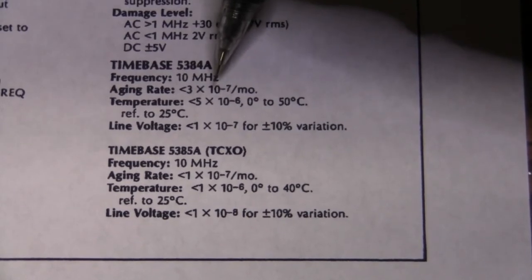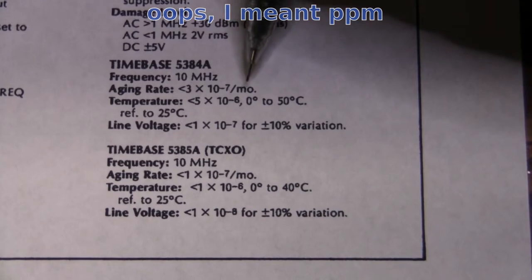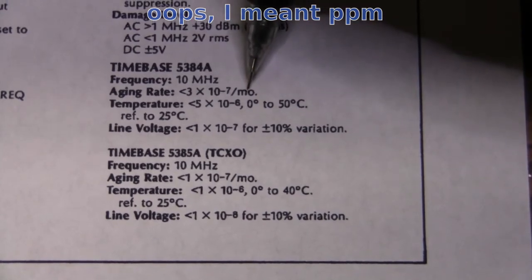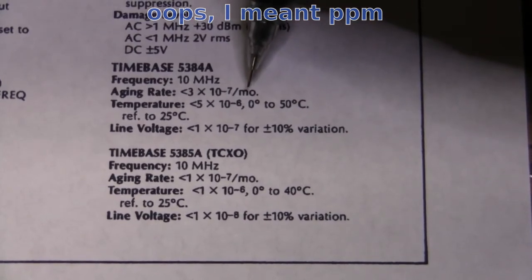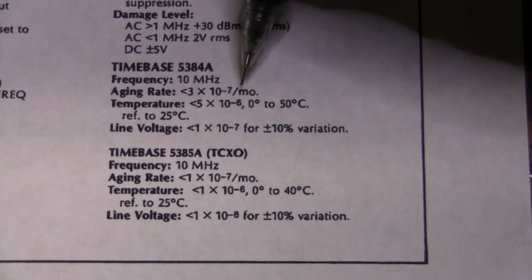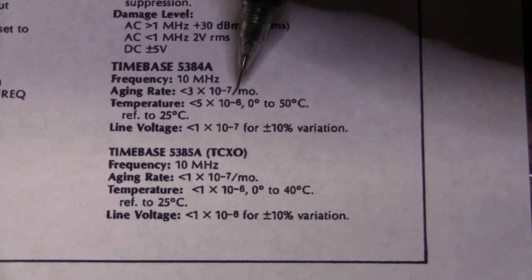But this is per month, and those oscillators I bought are rated at plus minus 1 ppm per year.